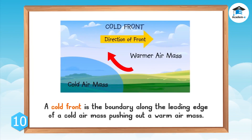A cold front is the boundary along the leading edge of a cold air mass pushing out a warm air mass. It gradually brings cooler air into an area. As the cold front passes, winds become gusty, there is a sudden drop in temperature, and heavy rain — sometimes with thunder and lightning — occurs. After a cold front moves through, the temperature is cooler, the rain stops, and cumulus clouds are replaced by stratus and stratocumulus clouds or clear skies.